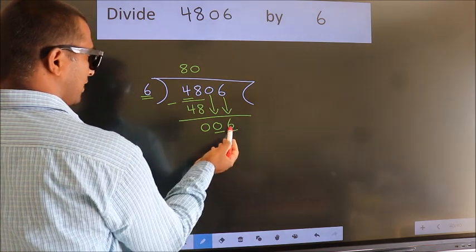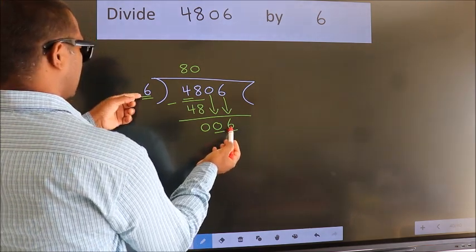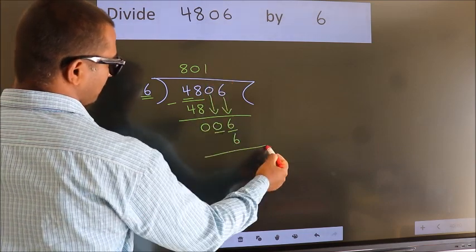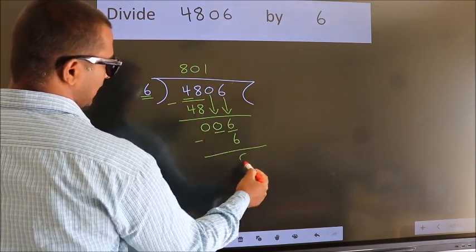Then only we can bring down this number. So, 6. When do we get 6? In the 6 table, 6 once is 6. Now we subtract. We get 0.